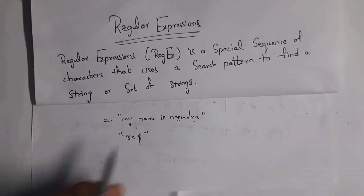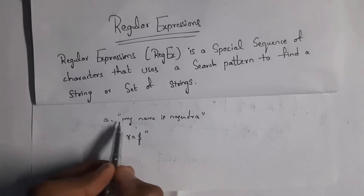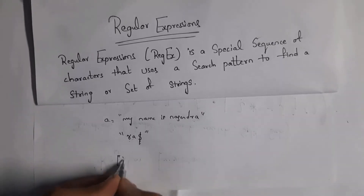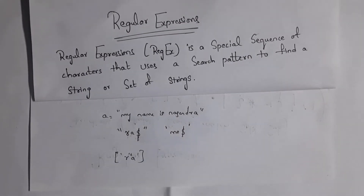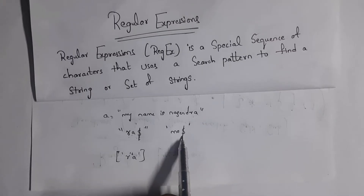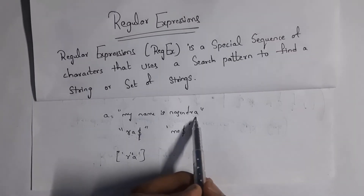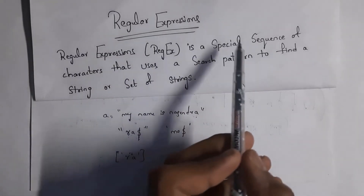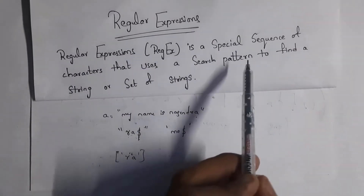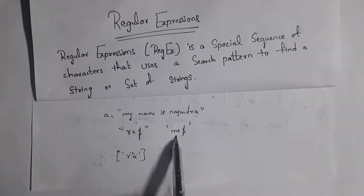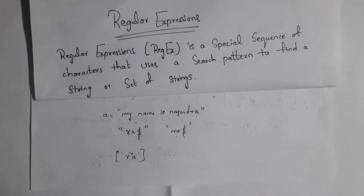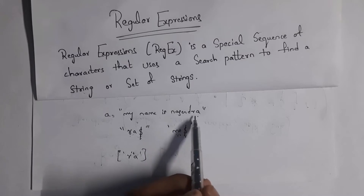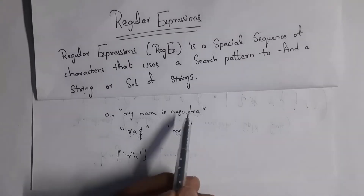So 'ra$' will check whether 'ra' is present at last or not. Yes, 'ra' is present at last, so I will get output 'ra'. For example, if I write 'me$', it will check whether 'me' is present at last or not — but the last characters are 'ra', so you won't get any output. This is the use of the dollar sign and the meaning of regular expression.